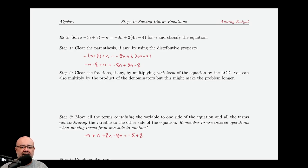In this example, we'll solve negative the quantity n plus 8 plus n equals negative 8n plus 2 times the quantity 4n minus 4. We're solving this for n, and as before, we're trying to classify the equation as well at the end.